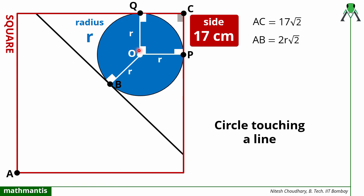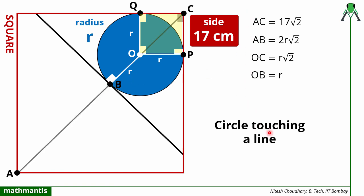Now we can define the diagonal of this yellow square also. So there are three squares total: the red square, the orange square, and this yellow square defined using the circle-tangent property. We can define OC as r√2, which is the diagonal length of the yellow square. The length OB has already been defined as r. I will use these lengths to find the radius of the circle.